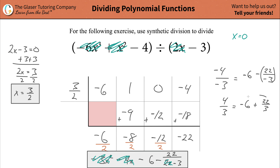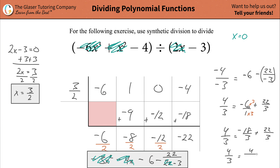I need common denominators, so I put 6 over 1 and multiply top and bottom by 3 to get 18 over 3. Don't forget the negative sign — so it's negative 18 over 3, plus 22 over 3. The numerator is negative 18 plus 22, which is positive 4, over 3. So 4 thirds equals 4 thirds — it checks out!